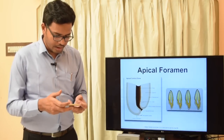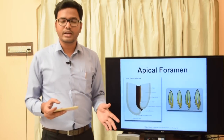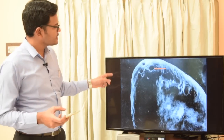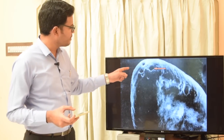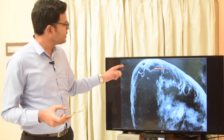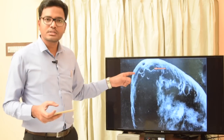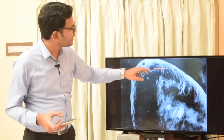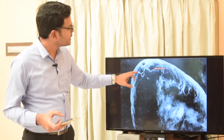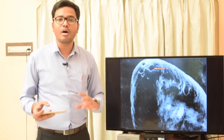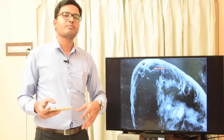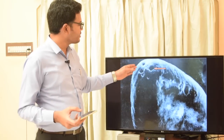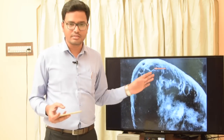This scanning electron micrographic image of a maxillary first molar's mesiobuccal root shows the main apical foramen marked in red, along with numerous accessory foramina. This confirms the presence of an apical delta with numerous accessory canals and foramen at the apex.